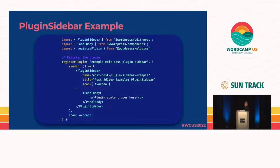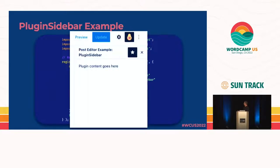The code gives it a name, title, my avocado icon, and a little bit of content. When that renders, it looks like this. This is something I'm sure everyone has seen — there are tons of plugins using it. I think this was one of the first slots available; Yoast was one of the first to really use it.